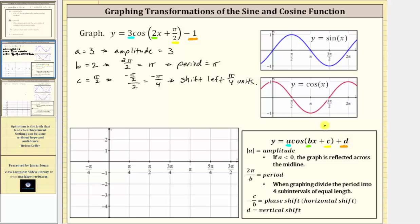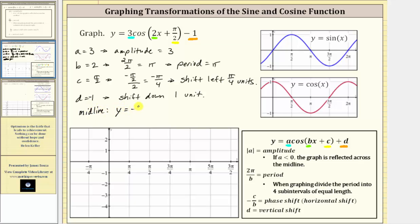And d is equal to negative one. Because d is equal to negative one, we have a vertical shift of down one unit. The graph is a transformation of the cosine function. Because we have a vertical shift of down one unit, we know the midline is going to be y equals negative one.